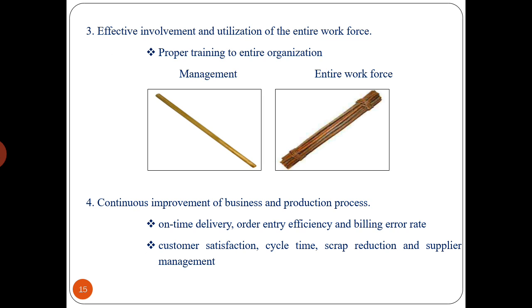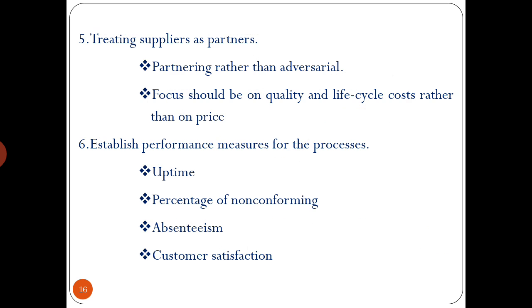The fifth approach — treating suppliers as partners — emphasizes partnering rather than an adversarial relationship, with focus on quality and lifecycle costs rather than on price. The sixth approach — established performance measures for the process — includes uptime, percentage of non-conforming, absenteeism, and customer satisfaction.